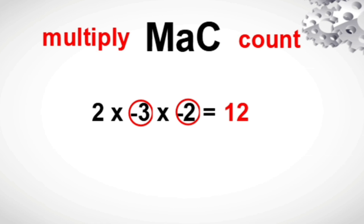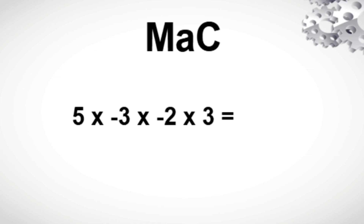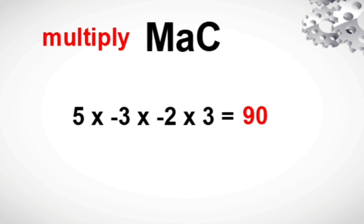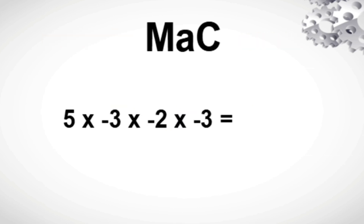Therefore our final answer is positive 12. This time let us have positive 5 times negative 3 times negative 2 times positive 3. First, multiply: 5 times 3 is 15, times 2 is 30, times 3 is 90. Next, count the number of negative integers in the factors — we have 1 and 2. Since we have an even number of negative integers, our product must be a positive integer. Therefore our final answer is positive 90.